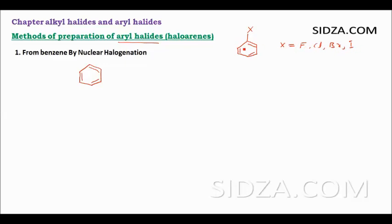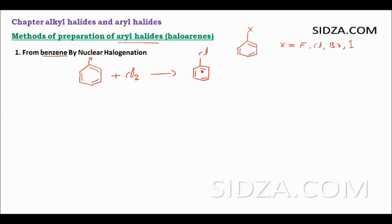How do we prepare these aryl halides? We can prepare them from the benzene ring by doing an electrophilic aromatic substitution reaction. If we react the benzene molecule with a halogen like Cl2, we can replace one hydrogen atom from benzene and get chlorobenzene plus HCl.